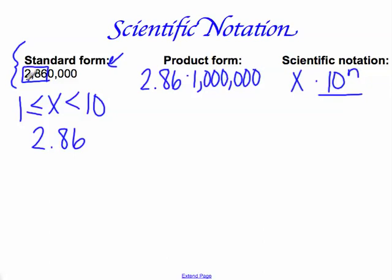And a way to figure that out is the highest digit is in the millions place. Therefore, scientific notation for 2,860,000 is 2 and 86 hundredths times 10 to the power of 6.